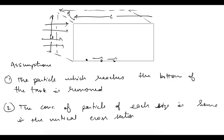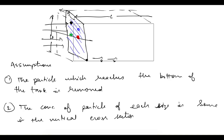The second assumption is that the concentration of particles of each size is uniform in any vertical cross section. This means that if we have four particle sizes — say black, blue, green, and red — their concentrations are the same at every point in the cross section. So if total depth is H, half of any given particle size will be above H/2 and half below.